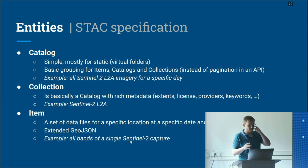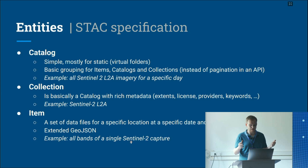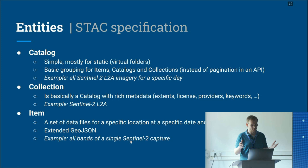The collection is basically like a catalogue but with more metadata that groups similar things. You can add more data like an extent, license, providers, etc., that you don't put in a catalogue. A catalogue is just an ID, description, title, etc. An example here would be the complete Sentinel-2 L2A dataset.